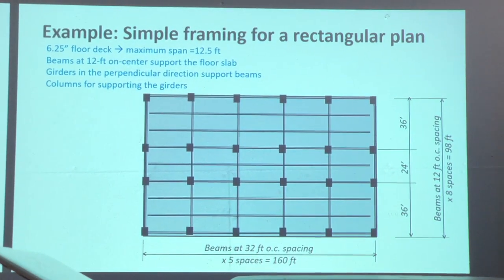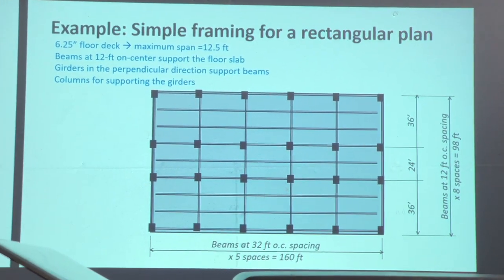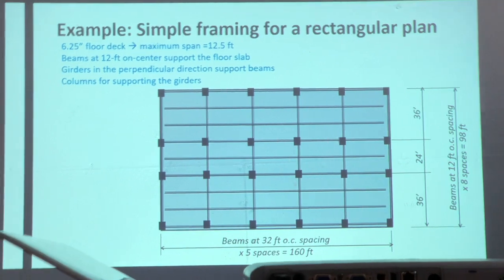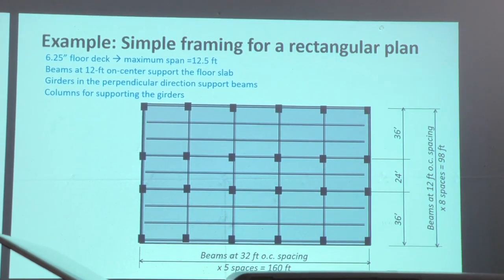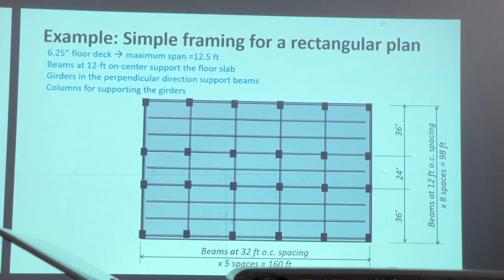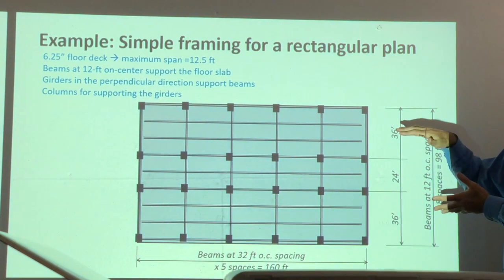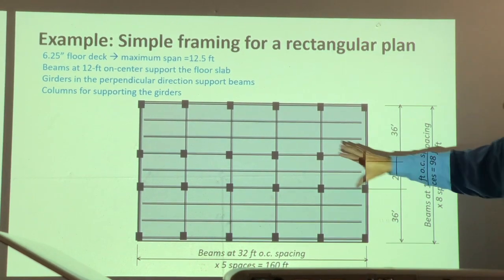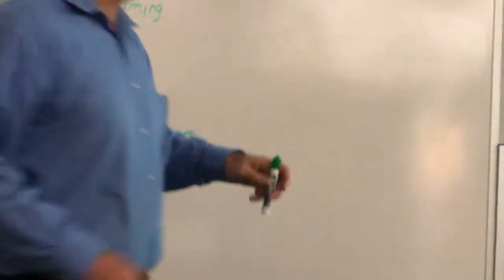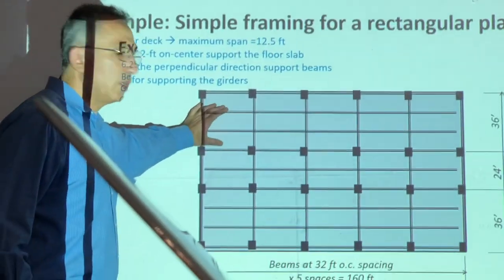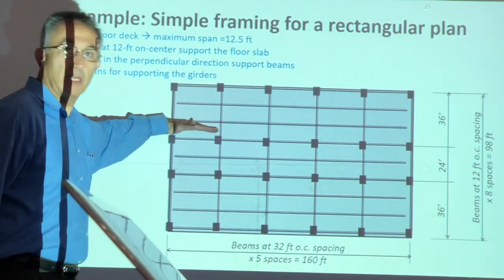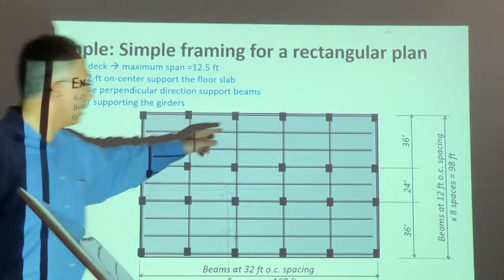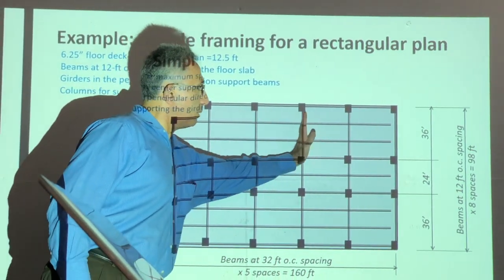Look at your function first. Start with your architectural program — circulation, lighting, what you want to create. Once you have the architectural plan, then you come back and say: I need to support this plan with a set of beams and decks. If this floor has no opening, how do I create an opening in the slab? You need beams running one direction and girders running the other direction.